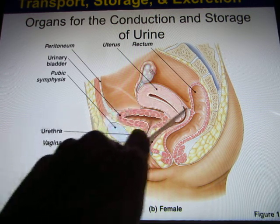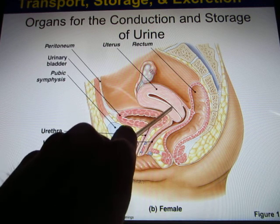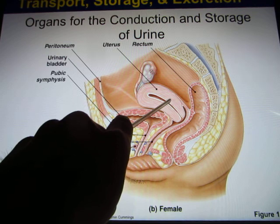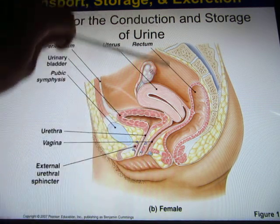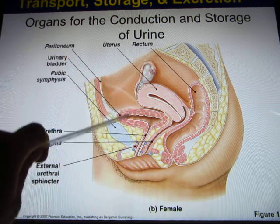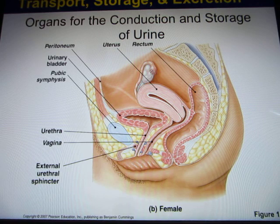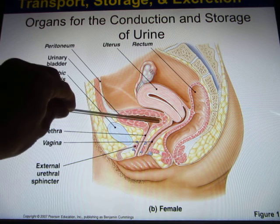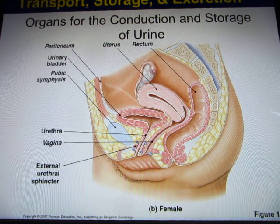In the third trimester of pregnancy, the uterus becomes very large and can press on the bladder. So practically every pregnant woman feels like she has to urinate frequently. It is actually because of the bladder being compressed by the weight of the uterus. Okay, that's it.